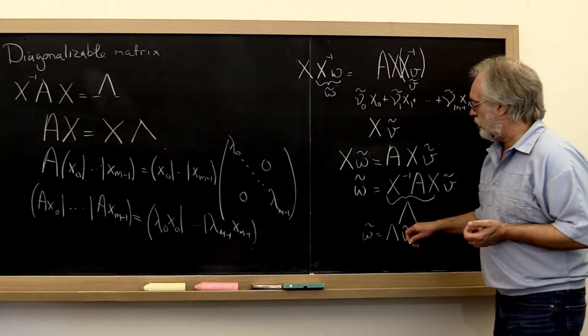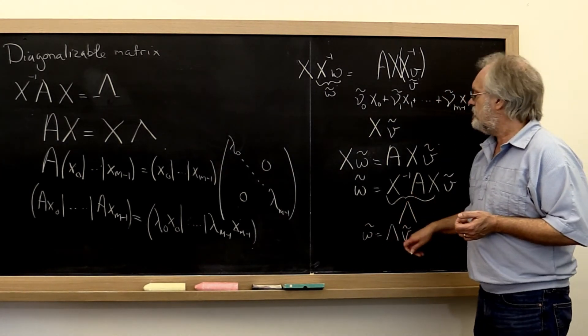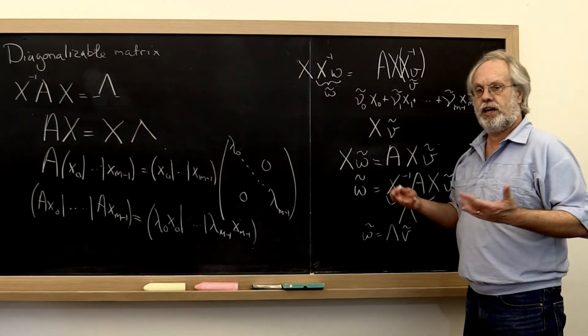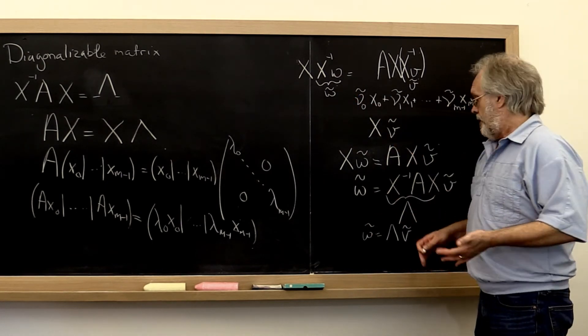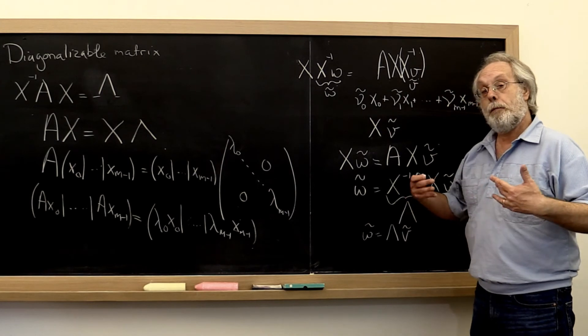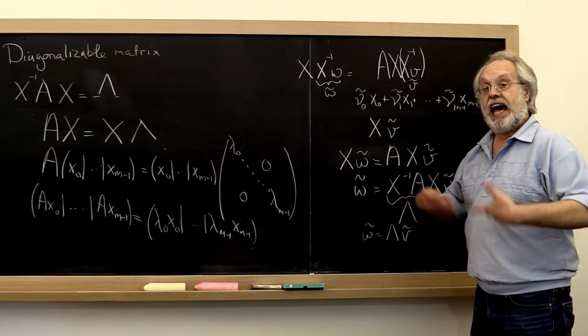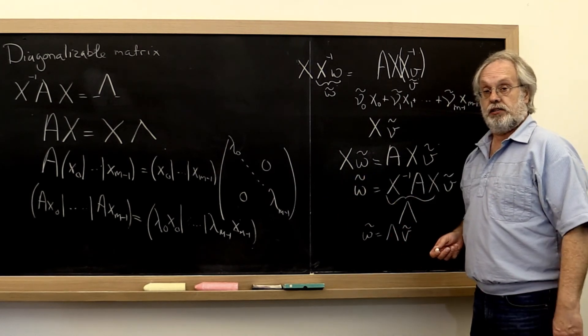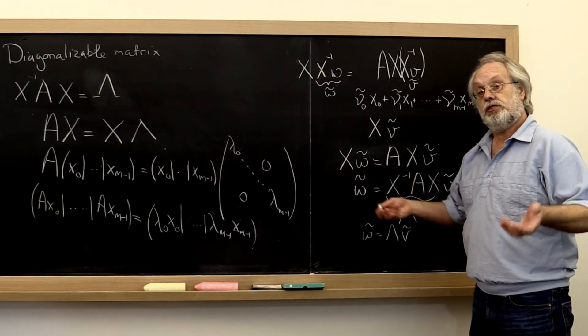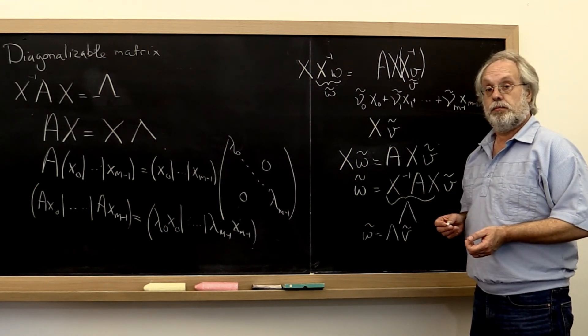Now that's kind of nice. What that means is that if we just view our vectors in the correct basis, then our matrix A starts acting as if it's a diagonal matrix. And diagonal matrices are just a lot more convenient to multiply with.